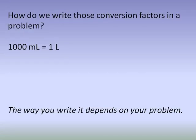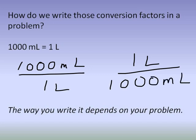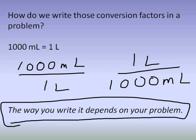You can take an equality such as 1,000 milliliters equals one liter and write it as a fraction — that's your conversion factor. There are two ways to do this: 1,000 milliliters over one liter, or one liter over 1,000 milliliters. The difference is that the units are flipped. Which way you set it up depends on the problem, and that's where the process I've developed simplifies things — it'll show you whether to put liters on top or on the bottom.